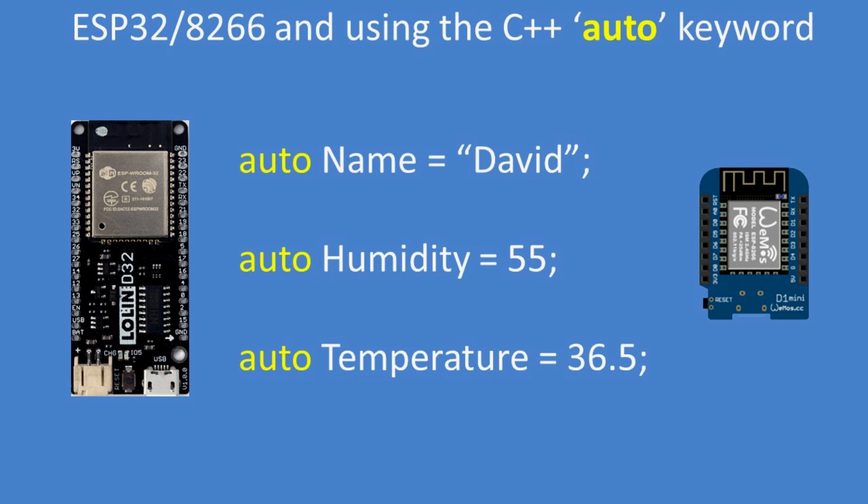When you're programming the ESP32 or 8266, you may find it useful to use the C++ auto keyword. But what is it and what does it do?